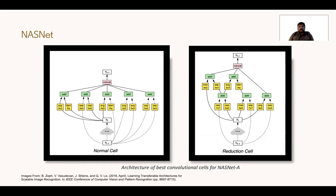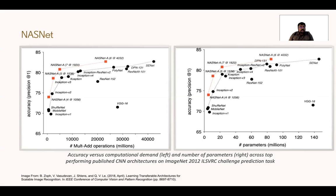Using this search algorithm, the authors found the two best-performing architectures for the normal cell and the reduction cell. Both depend on a variety of different kinds of convolutions and addition operations. Using NASNet, the authors find three top-performing architectures called NASNet A, NASNet B, and NASNet C. NASNet outperforms almost all comparable networks, including all Inception-kind networks and ResNet variants.